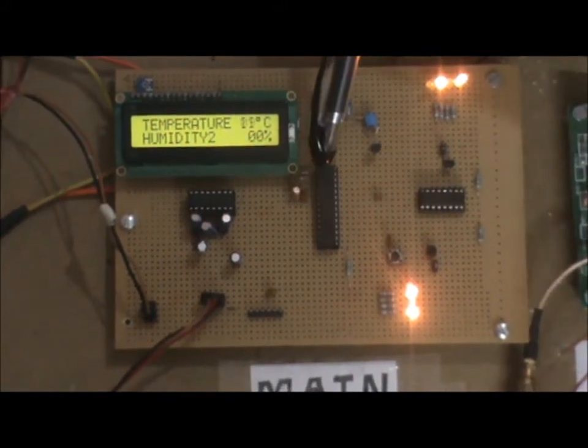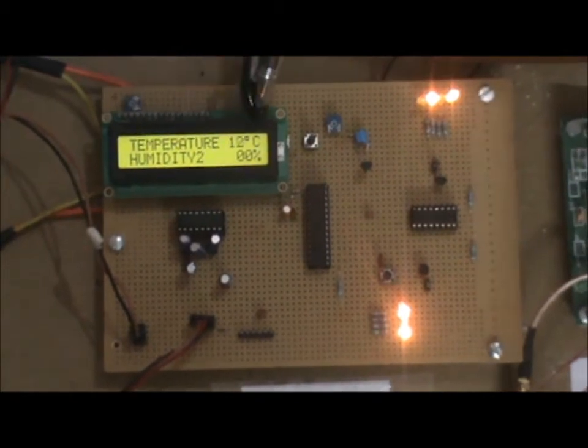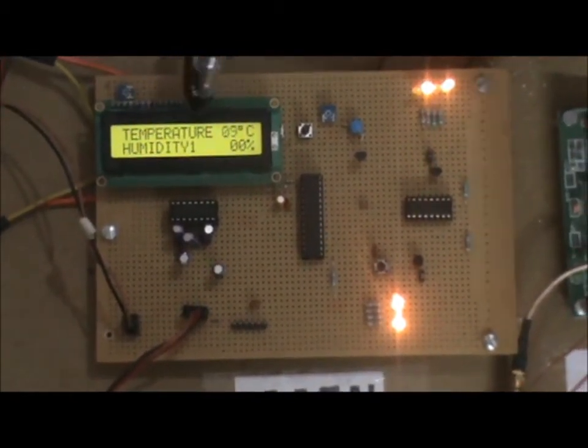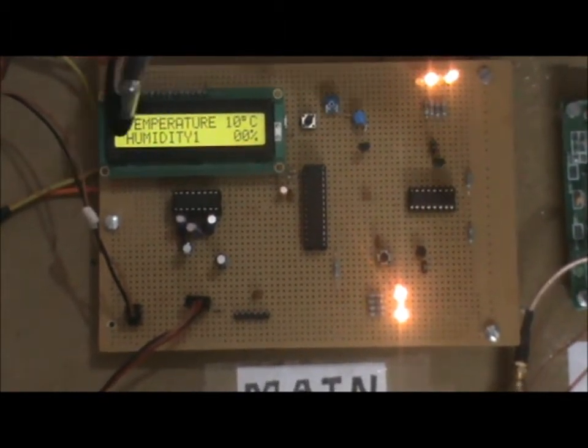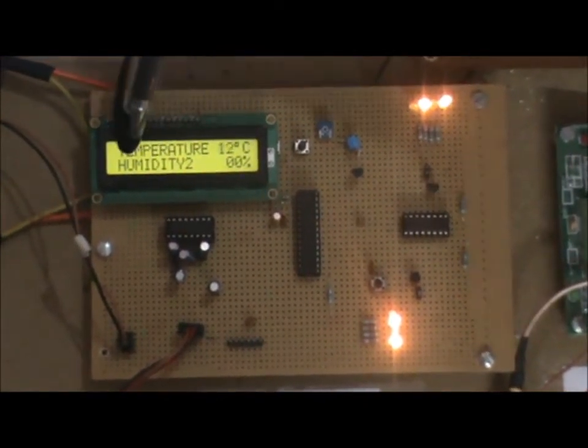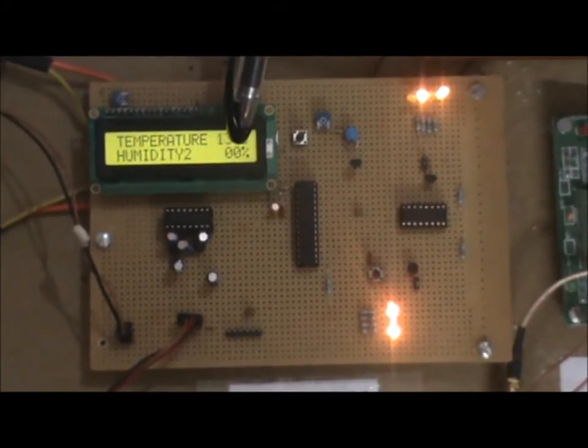This is the PIC microcontroller that controls the main circuit. This is LCD panel which displays the value of temperature at all times and humidity of the two farms after an interval of about 10 seconds. Here, humidity of the first farm is displayed that is 0%. Now, humidity of the second farm appears that is also 0%.